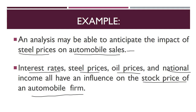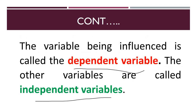Similarly, interest rate, steel prices, oil prices, and national income are considered independent variables, and the stock price of the automobile firm is the dependent variable — because the stock price is dependent on these factors. That's why it is called the dependent variable and these are the independent variables.